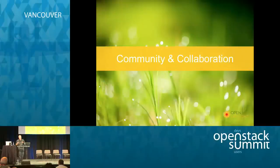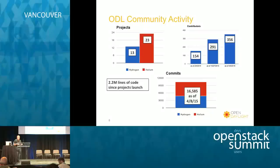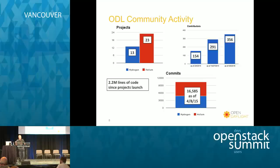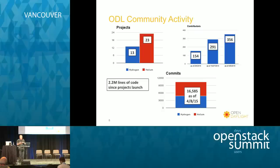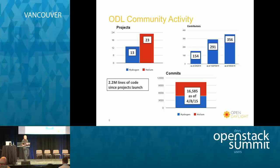I'm going to talk a little bit about community and collaboration — important themes both within an open source project and across open source projects. From our community standpoint, OpenDaylight's been around for two years and we've had two releases: Hydrogen and Helium, and yes, we are following the periodic table. Lithium is our next release, due on June 25th, so we're just now coming up on code freeze and entering our release candidate phase. For Hydrogen and Helium, you can see the number of projects — 13 in the first, 23 in the second — and Lithium actually has about 40 projects. We're up well over 300 active contributors with a code base sitting around 2.2 million lines of code.